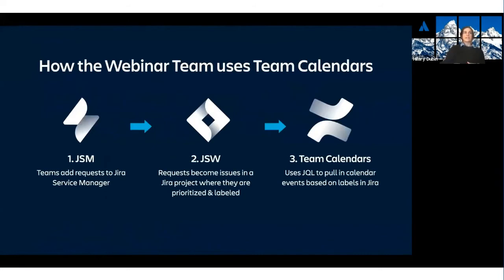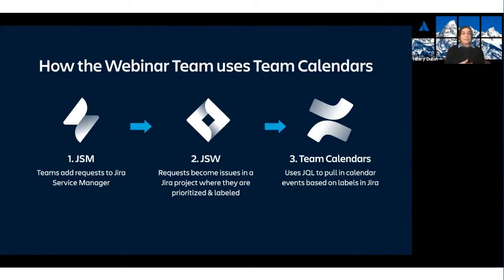By linking Jira Service Manager, Jira Software, and Confluence Team Calendars, the webinar team is able to create a seamless process to manage requests and plan their schedule accordingly. First, internal teams can add requests into Jira Service Manager. Then, those requests become issues in a Jira project where they're prioritized and labeled. Finally, those issues get automatically transferred into calendar events based on their labels.